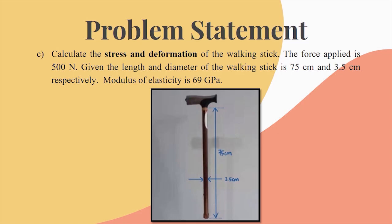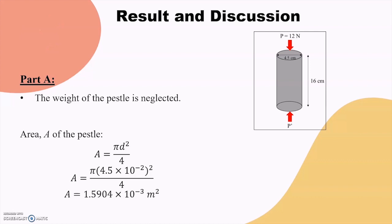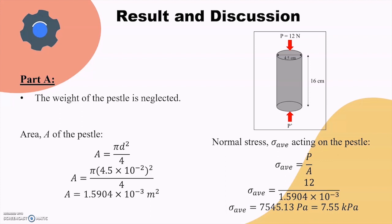Moving on to the result and discussion, in Part A we are to determine the normal stress and torsional stress in the pestle. In this case, the weight of the pestle is neglected. To determine the normal stress in the pestle under axial loading, we should first compute the area of the pestle by using the formula A equals pi d squared over 4. We will get the area equals to 1.5904 times 10 to the power of negative 3 meter squared. Hence, the normal stress acting on the pestle under axial loading can be determined by using the formula sigma average equals to P over A, and we will get the normal stress is 7.55 kilopascals.